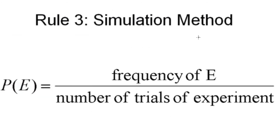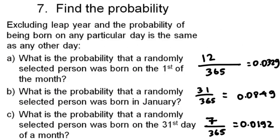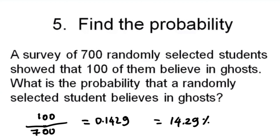Rule 3, the simulation method: P(E) is the frequency of E over the number of trials of the experiment. There is no particular fixed answer for this because simulation results can vary. These types of questions are not likely to appear on exams. Those are the main probability rules — I hope you find this video helpful. Thanks for watching, and check out my playlist for more statistics videos.